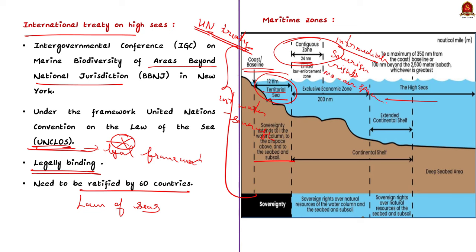Each coastal state may claim an exclusive economic zone extending up to 200 nautical miles from its baseline. Within its EEZ, a coastal state has sovereign rights for exploring, exploiting, conserving, and managing natural resources — whether living or non-living — on the seabed and subsoil, including energy production from water currents and wind. Unlike the territorial sea, the EEZ does not give a coastal state the right to prohibit or limit freedom of navigation or overflight, subject to very limited exceptions.